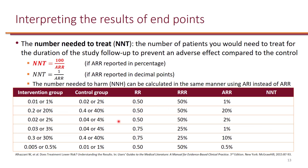It's extremely important to calculate number needed to treat when you analyze the results of studies. In order to calculate number needed to treat, the results need to be statistically significant, the endpoint needs to be clinical, and it must be a superiority trial. Do not calculate number needed to treat for surrogate markers, do not calculate it if results are not statistically significant, and do not calculate it in non-inferiority studies.